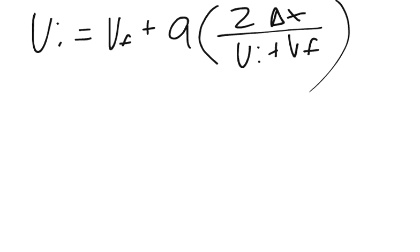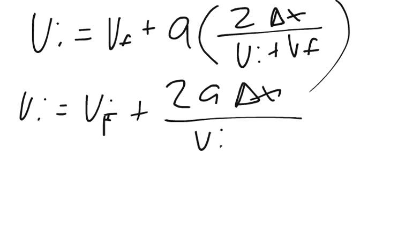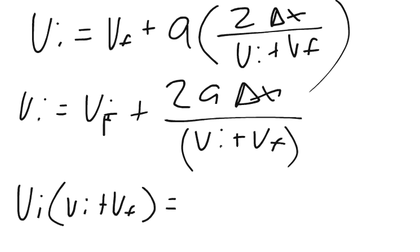Now, the only thing left to do is to simplify this equation. That's going to be a couple-step process. I've got Vi equals the final velocity plus 2a change of x over the initial plus the final velocity. I'm going to multiply this term through both sides, and I'll get Vi times the initial plus the final equals the final velocity times the initial plus the final, plus 2a change of x.